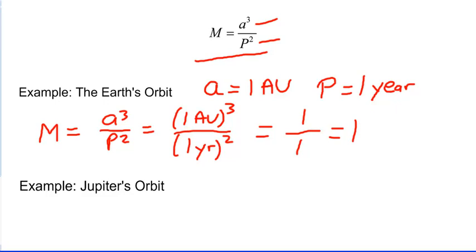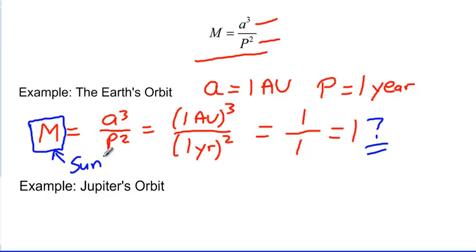The question becomes: one what? The unit is the mass of the object that the Earth is orbiting — the Sun. So we say the Sun has a mass of one, and we define that to be one solar mass, written as one M with a Sun symbol — a circle with a dot in the center. So the Earth is orbiting an object of one solar mass. This is essentially done by definition.